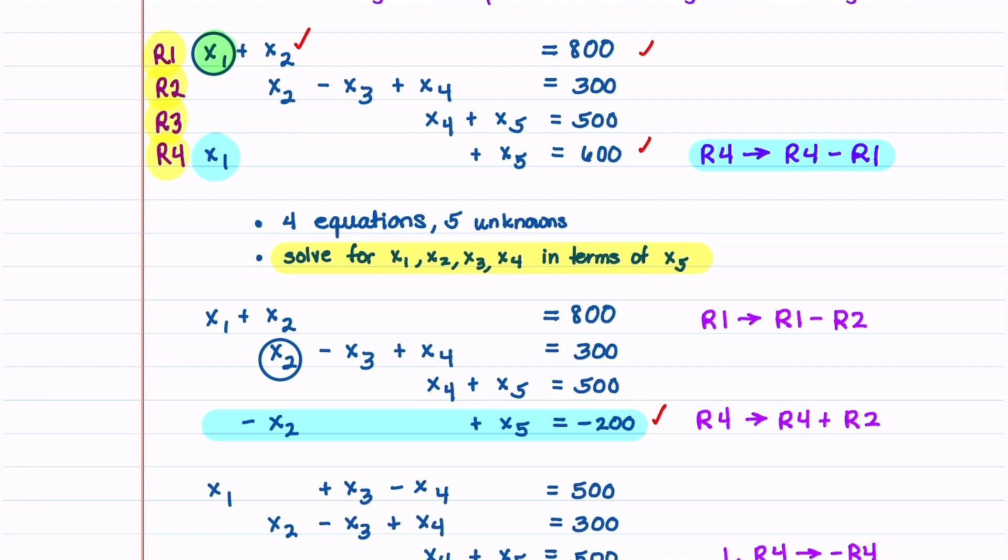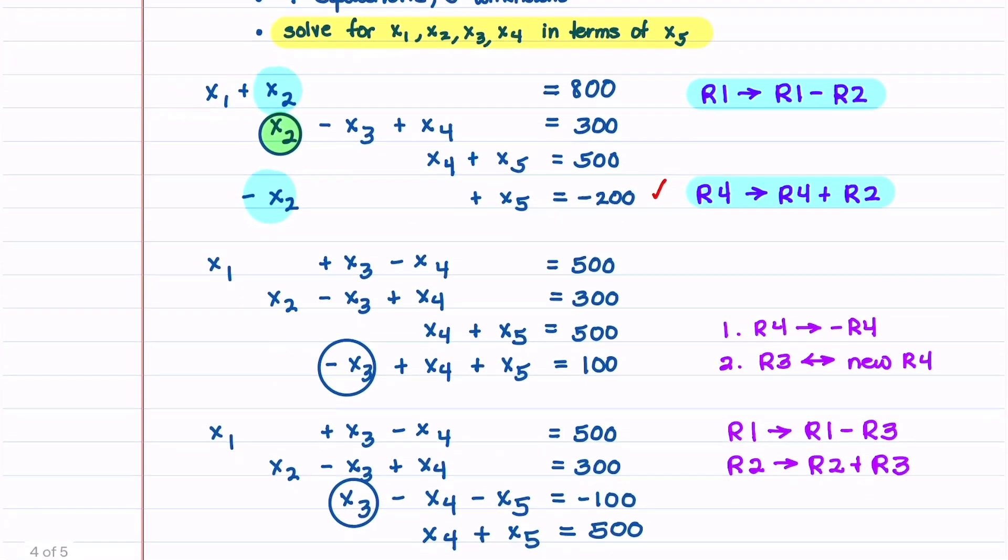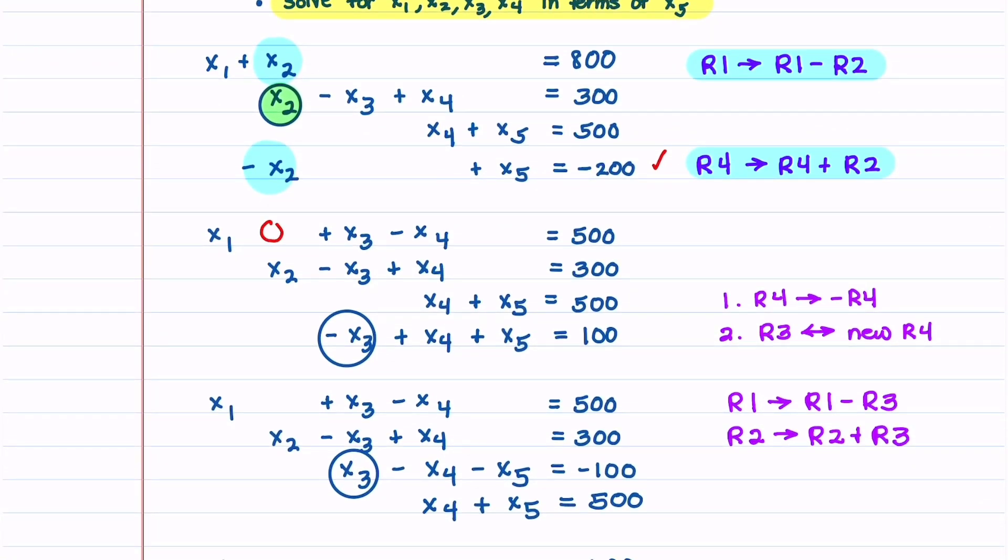Now we're going to do something similar with x2. We're going to choose that our second equation is the only one with an x2, and we're going to eliminate x2 from this equation and from this equation. To do that, row 1 will be row 1 minus row 2, and row 4 will be row 4 plus row 2.